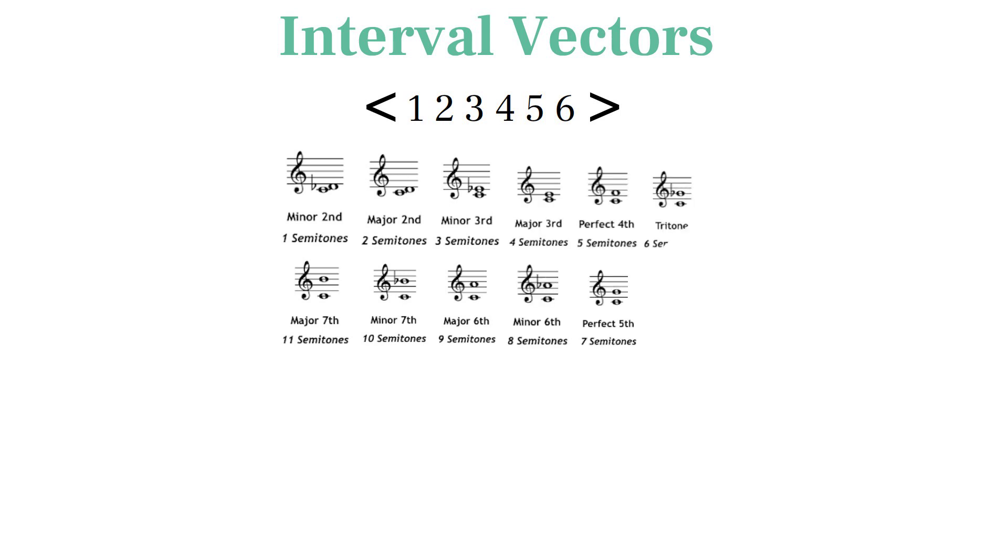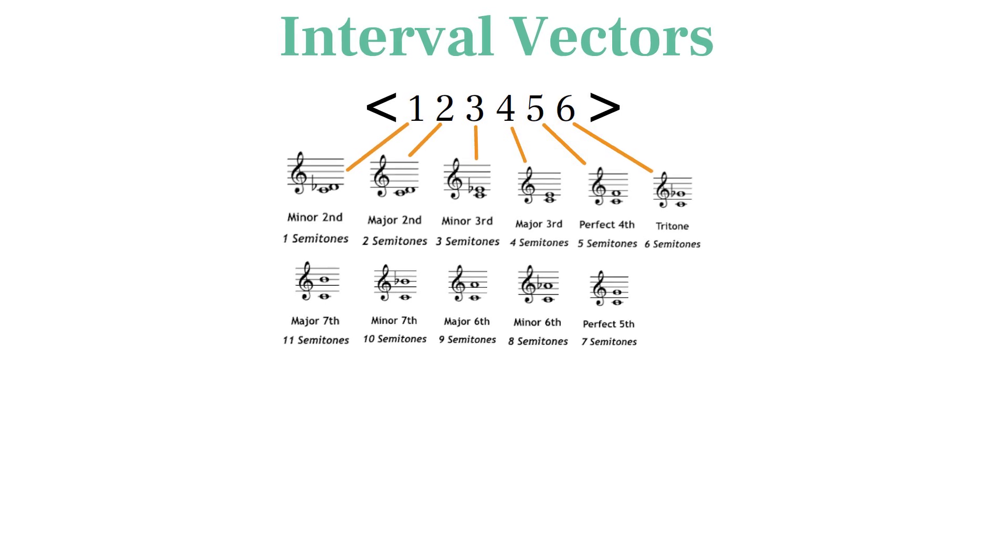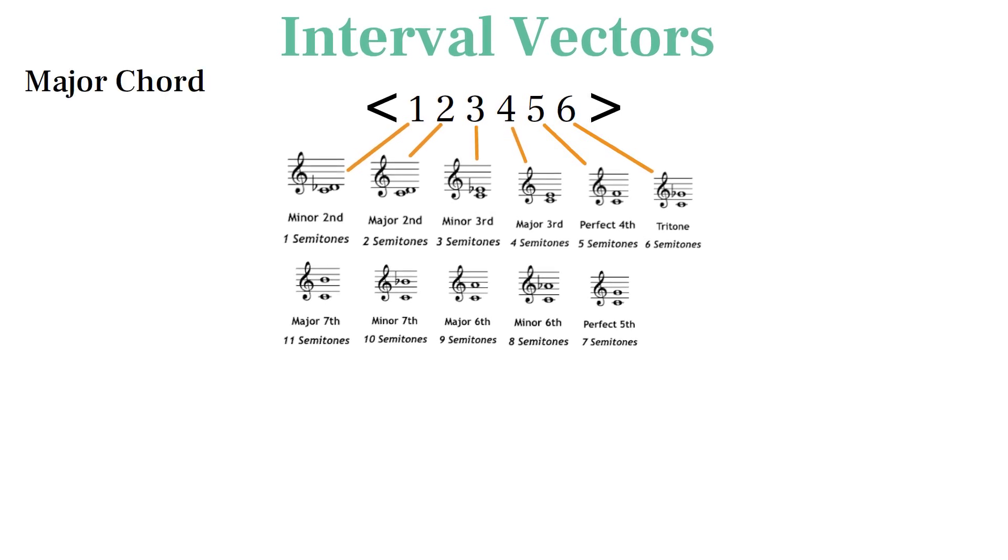The first number shows how many total half-steps there are, the second number shows how many whole steps, and so on until the last number shows how many tritones there are in the set.